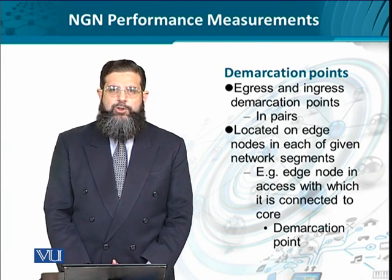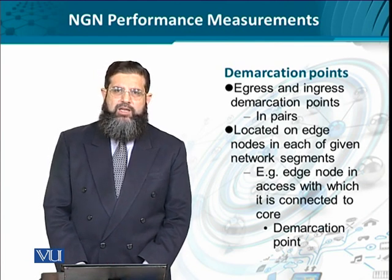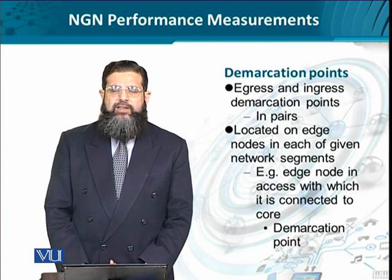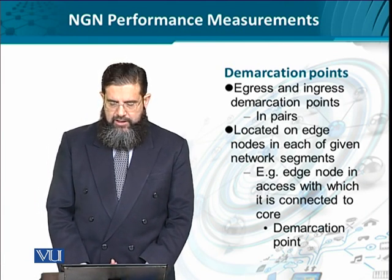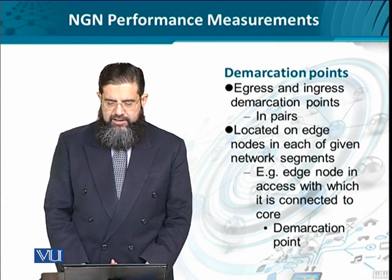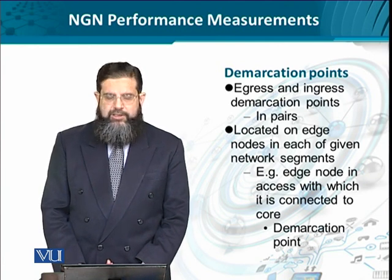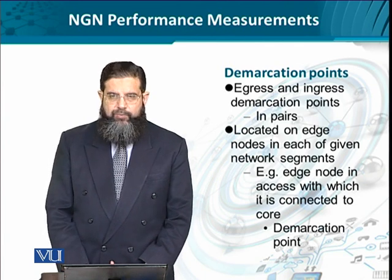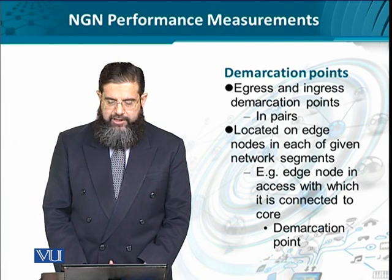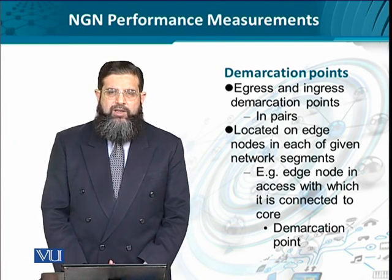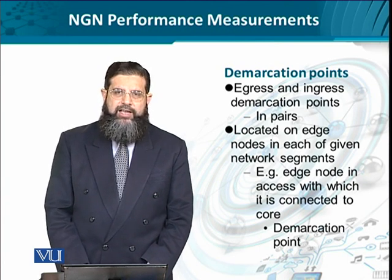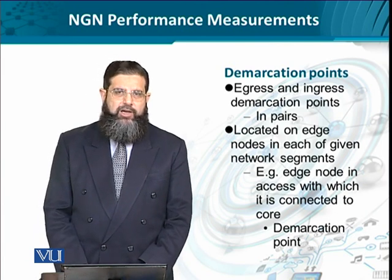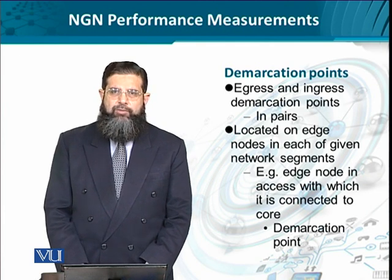A demarcation point, as the name implies, is used to identify, label, or earmark something. These are basically the network elements located on the edge of the connectivity of different networks. For instance, if we have an edge node in the access network connecting it to the core, then that particular device — a network element like a switch or a router — is going to be the demarcation point. The demarcation point is a place where measurements can be made. Usually the demarcation points are measured in pairs: we have the ingress demarcation point and the egress demarcation point, and we look at the scope of service from the point of view of the ingress and egress demarcation points according to the scope.